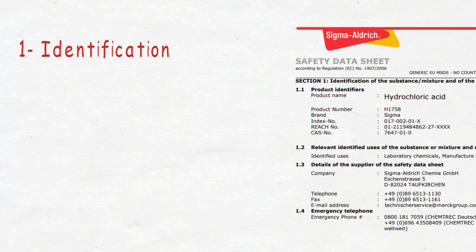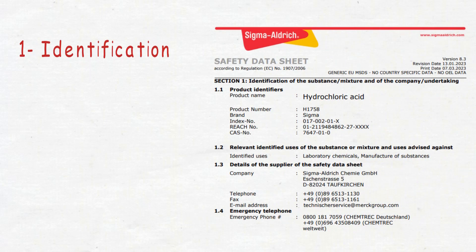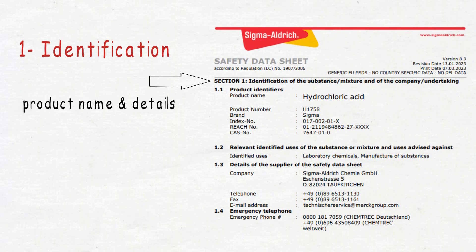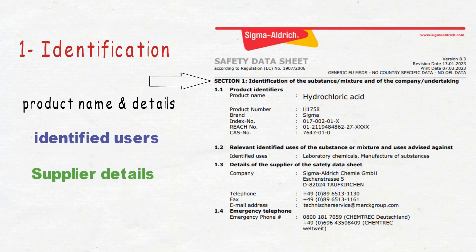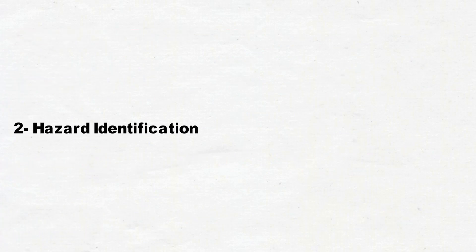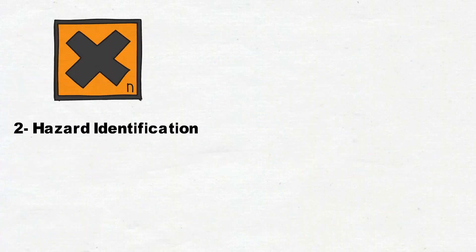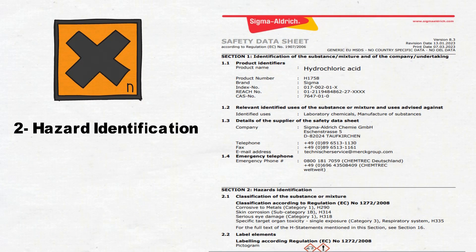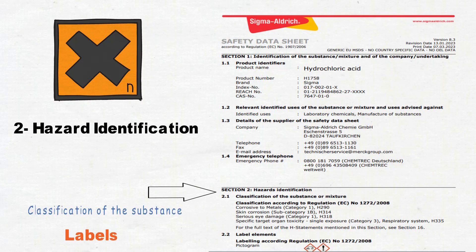In section number 1, Identification, you will find the product name, who the relevant users are, the details of the supplier, and most likely an emergency phone number. In section 2, Hazard Identification, you will see the classification of that substance and the label of that hazard.